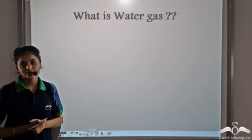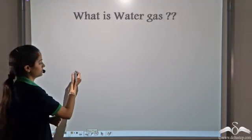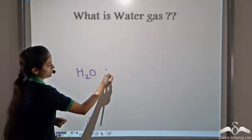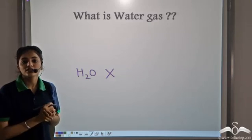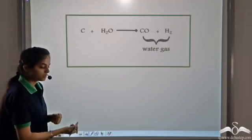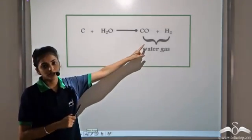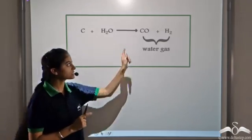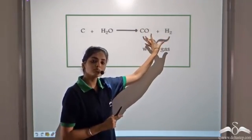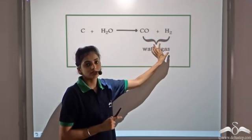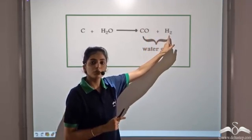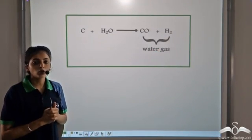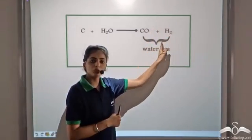What do you think water gas is? You might think water in the gaseous state is steam, but when we talk of water gas, it is a mixture of Carbon monoxide and Hydrogen gas. When Carbon reacts with water, it forms this mixture of two gases — Carbon monoxide and Hydrogen — which is known as water gas. Do not confuse water gas with water in the gaseous state.